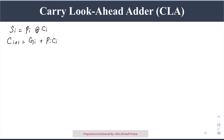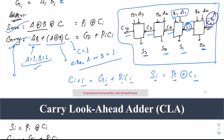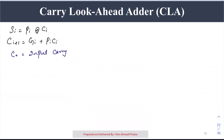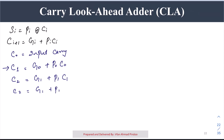Using this carry equation, we now derive all intermediate carries. C0 is the input carry, available at the start. C1 = G0 + P0 * C0. C2 = G1 + P1 * C1, and substituting C1 gives C2 = G1 + P1*G0 + P1*P0*C0.